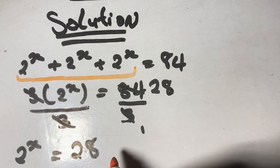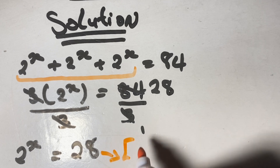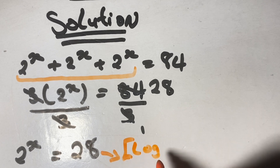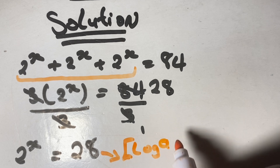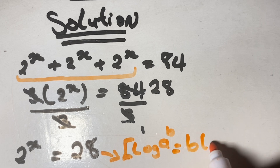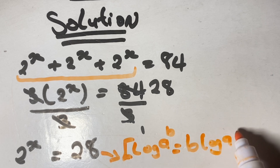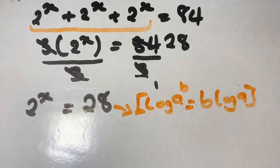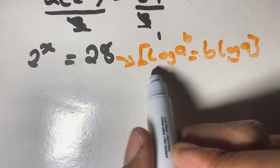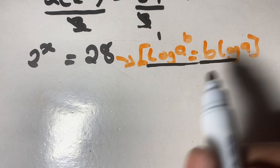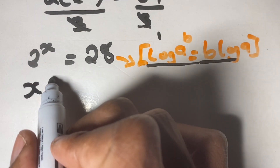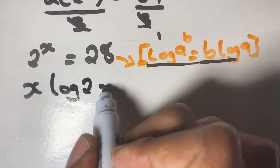Now this equation looks simplified, but 28 has no rational root. Therefore we're going to use log to solve this. We solve the value of x by using our logarithm rule, where log a to the power of b is equal to b — the power — times log a.